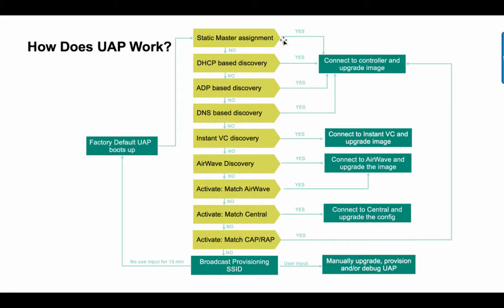How does it work? If you take a factory default UAP, it goes through a whole list to discover what it needs to be. First, you can assign a static assignment on the AP itself — it will then go directly to the controller, download the controller image, and become a Campus AP. It can also be based on DHCP option 43, ADP (Aruba Discovery Protocol), or DNS-based via Aruba-Master. In any of these four cases, the UAP will connect to the controller, download the Campus AP image, and become a Campus AP.